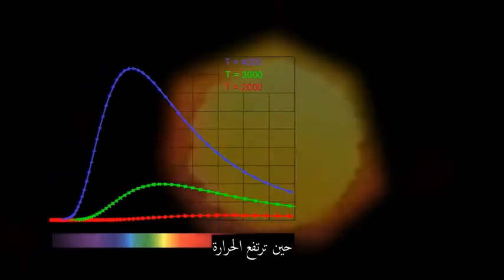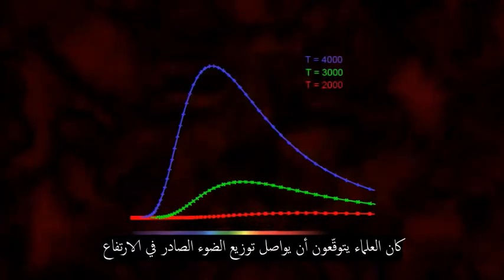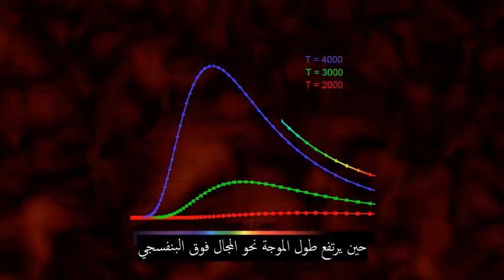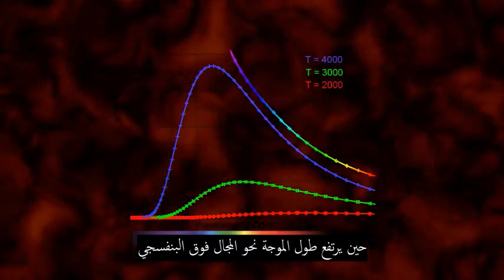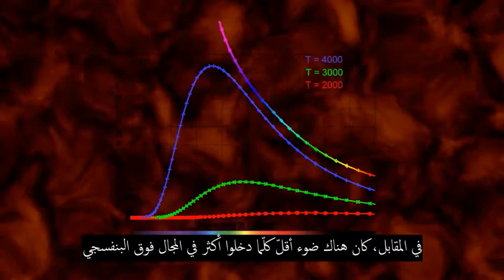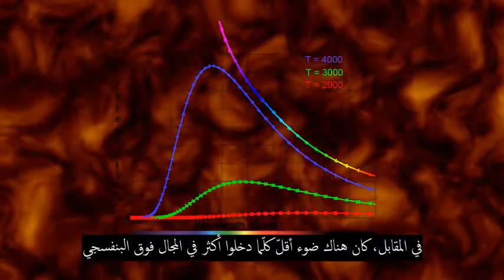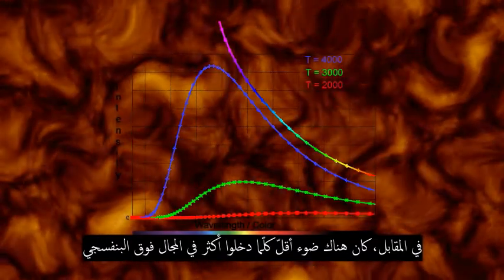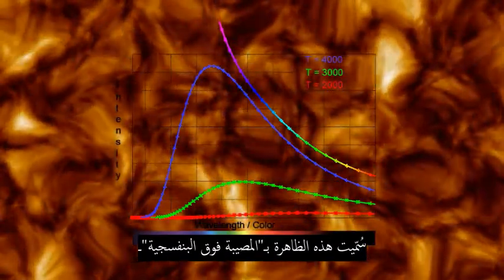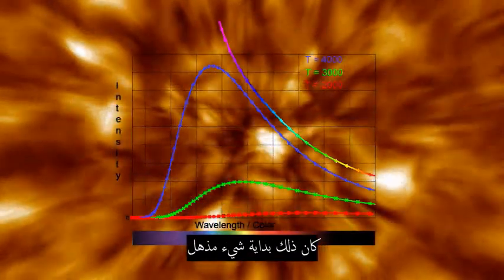But there was a problem. The scientists expected the distribution of emitted light to continue to increase at wavelengths toward the ultraviolet end of the distribution. It didn't. Instead, there was less and less light given off as they went further and further into the ultraviolet. This was called the ultraviolet catastrophe. But it wasn't a catastrophe at all — it was the beginning of something remarkable.